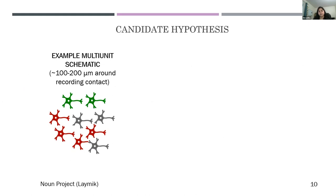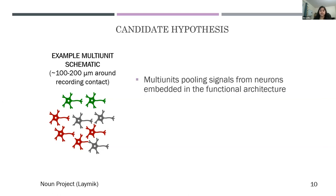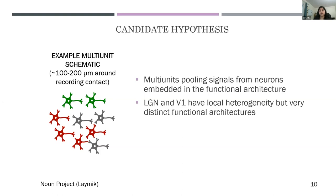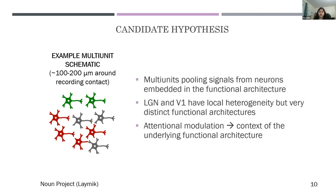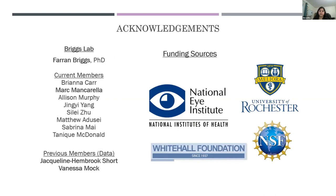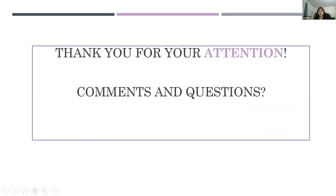One candidate hypothesis for the differences between LGN and V1 relates to how multi-unit activity captures signals across neurons. Multi-unit captures activity within about 200 micrometers of the recording contact, pooling signals embedded in the local functional architecture. Both LGN and V1 are locally heterogeneous but have distinct functional architectures — the main organizing principle in LGN is its layered structure, whereas in V1 it is the columnar structure. This could explain why we see these large, inconsistent differences relative to prior work. When discussing attention modulation of population activity, we must consider it in the context of the underlying functional architecture.